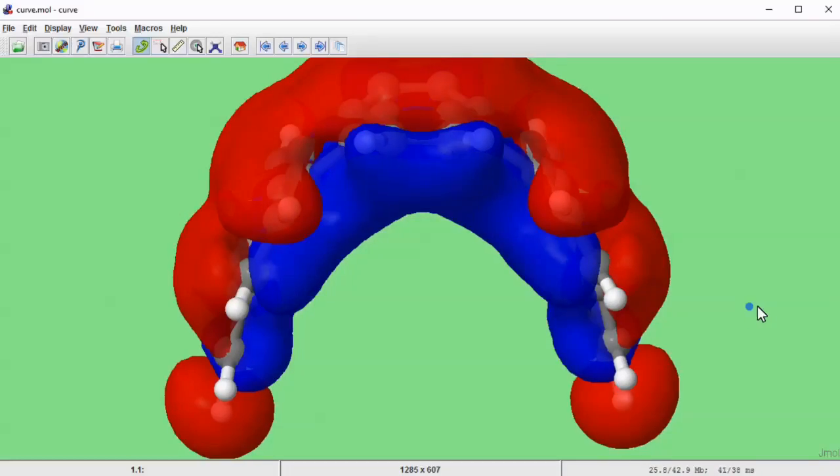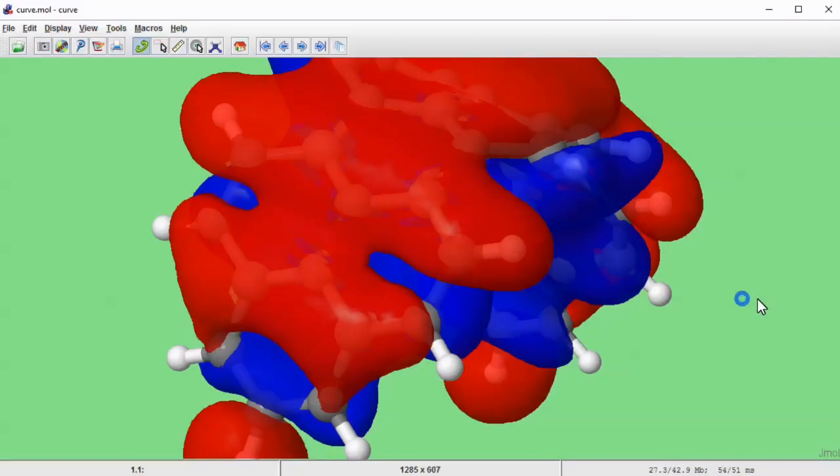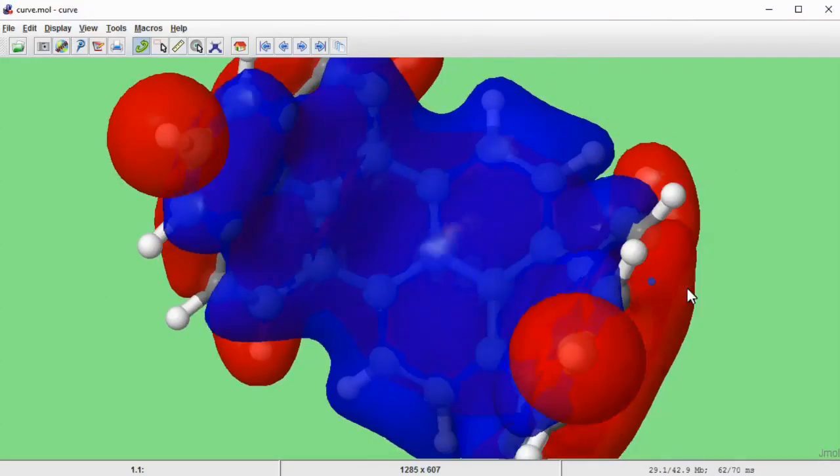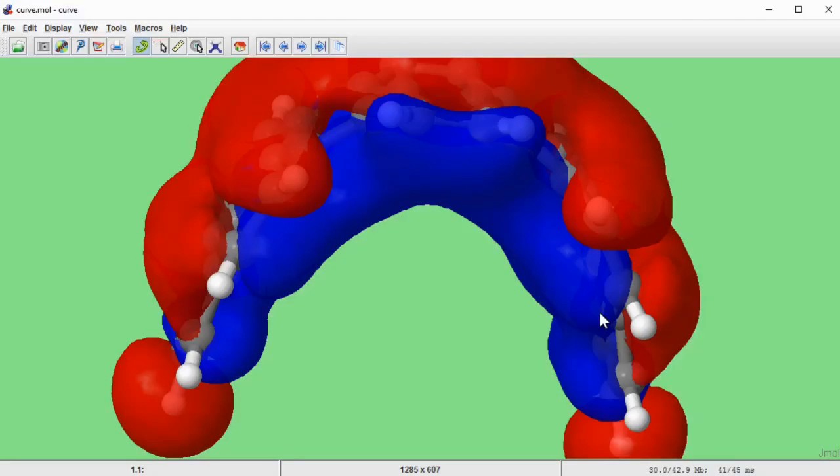This is a closer look at the lowest energy pi-bond of teropyrenophane. The inner lobe is continuous, but the outer lobe has gaps, presumably because it has stretched across a larger surface area.